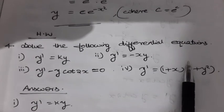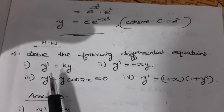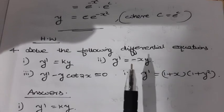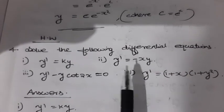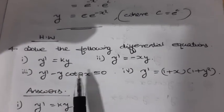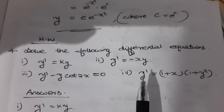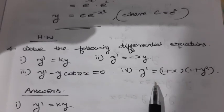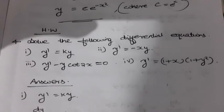Solve the following differential equations: first, y' = ky; second, y' = −xy; third, y' − y·4x = 0; and last, y' = (1 + x)(1 + y²).